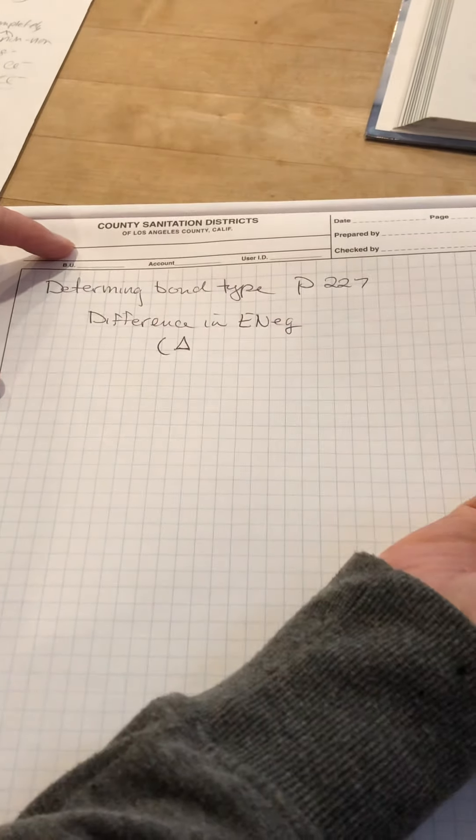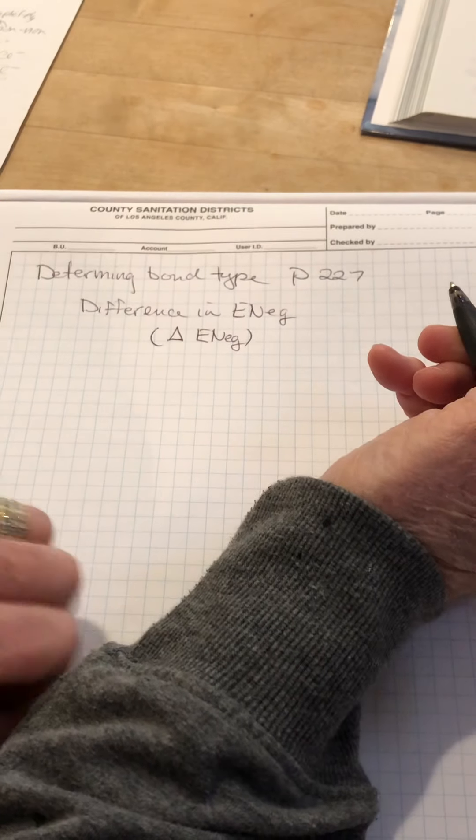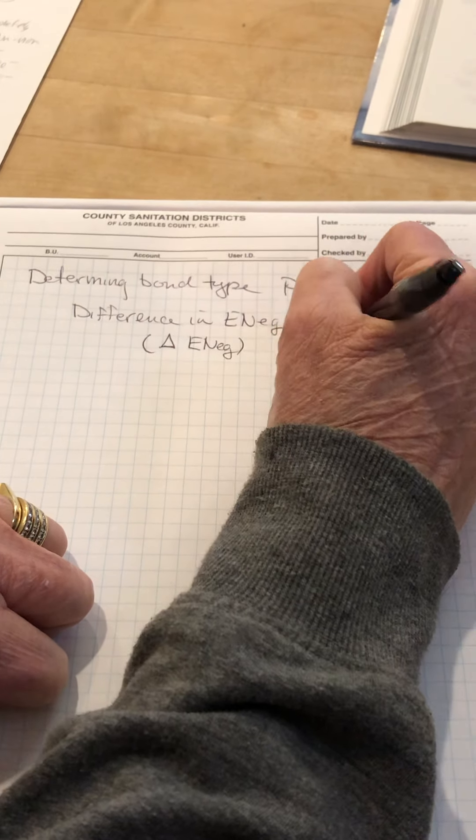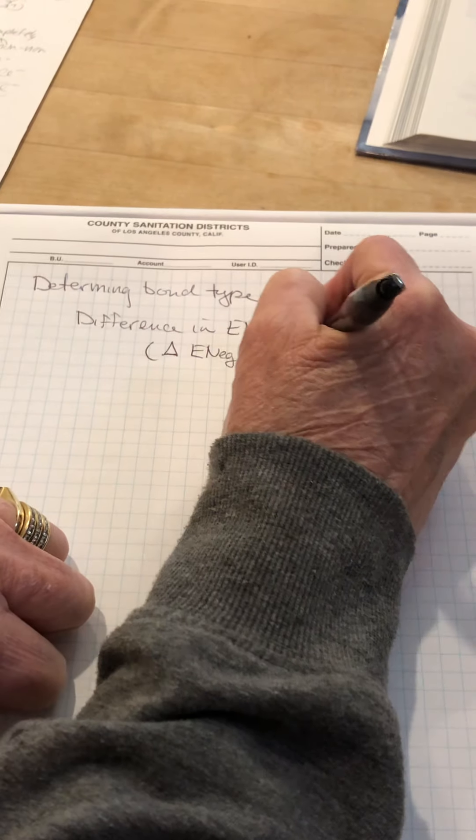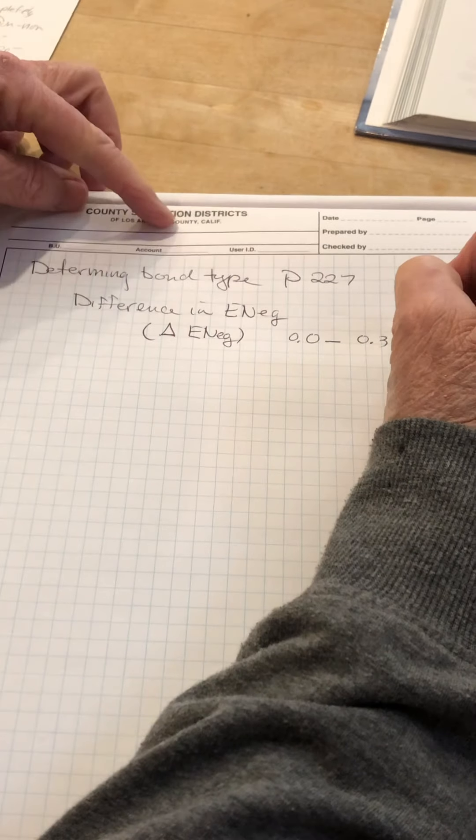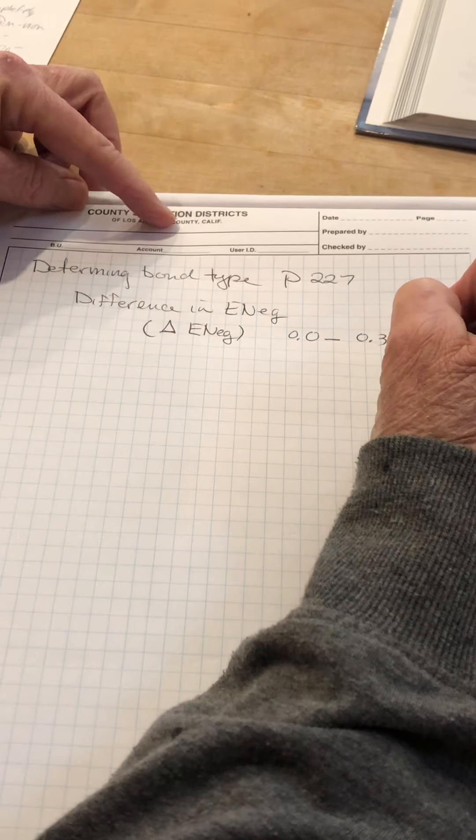Delta E neg, difference in electronegativity, of 0 to 0.3, that bond is considered to be nonpolar covalent.